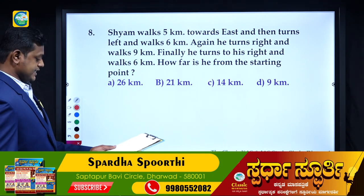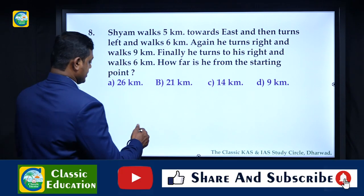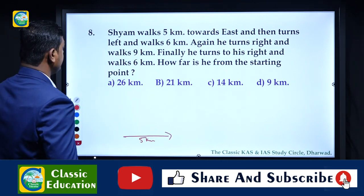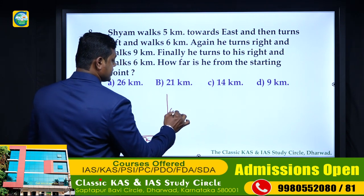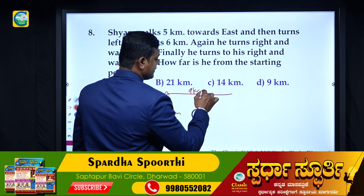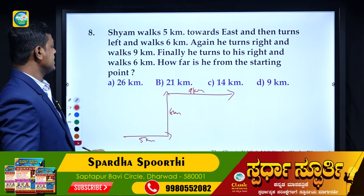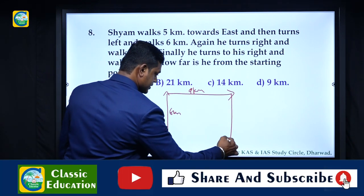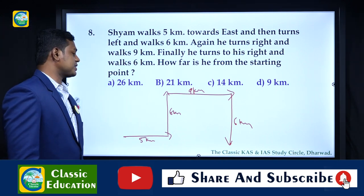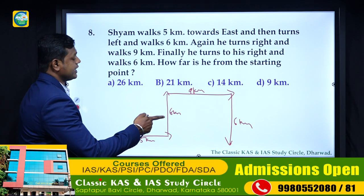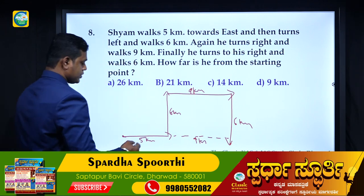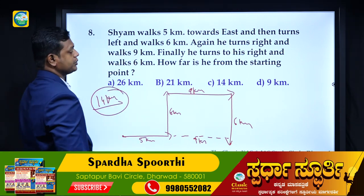Question 8: Shyam walked 5 kilometers towards east. Then he turns left and walks 6 kilometers. Again he turns right and walks 9 kilometers. Finally he turns to his right and walks 6 kilometers. How far is he from the starting point? Five plus nine equals 14 kilometers. Option number C, which is 14 kilometers, is the right answer.